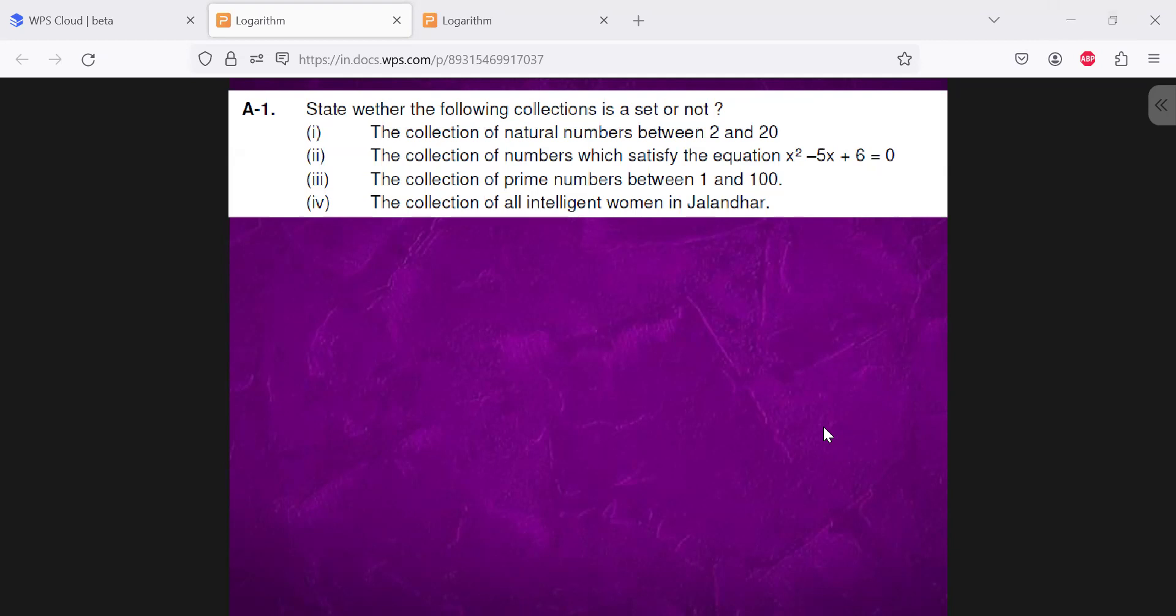So how do we solve? So it is like the first number, the collection of natural numbers between 2 to 20. So it is 3, 4, 5, 6, dot dot dot up to 19. So this is a set with defined numbers, the collection of natural numbers.